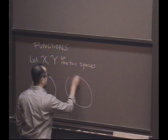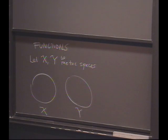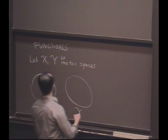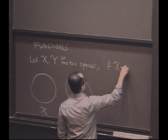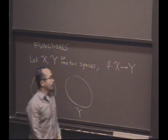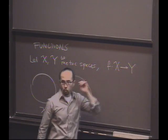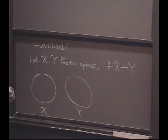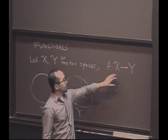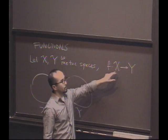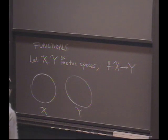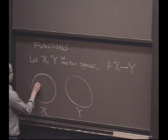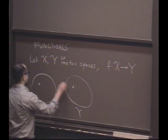You might think of X as here and Y as here. A function is going to be an assignment, as we've defined from the very beginning of class, an assignment of a point in X to a point in Y, in such a way that if I plug in a point X here, it always spits out the same answer. You can think of that as taking points over here to points over here.